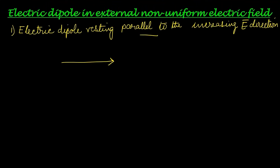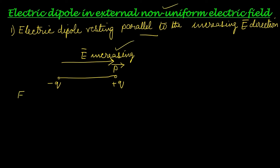Now we will discuss the first case. This is the increasing electric field direction, and the electric dipole moment p is aligned parallel to it. When a dipole rests parallel to a uniform electric field there is no torque and no force, but here it is different. The force on negative q is F1 = negative q·E1, where E1 is the electric field experienced by negative q. Their directions are different because the electric field is non-uniform.